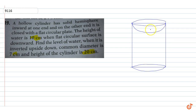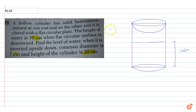Now, the height of the water is 10 cm. So this is the height given — 10 cm. Similarly, the diameter is 7 cm, so the radius is 3.5 cm. The R value is 3.5 cm, and the total height of the cylinder is 20 cm.